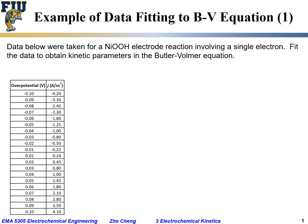Now let's look at an example of fitting actually experimentally measured polarization curve, which is overpotential versus current density data, to Butler-Volmer equation to get the kinetic parameters such as exchange current density and the symmetry factor.